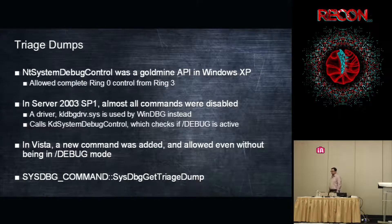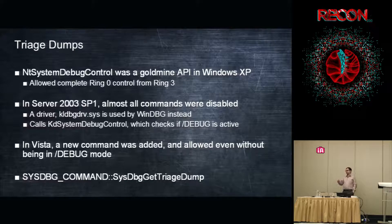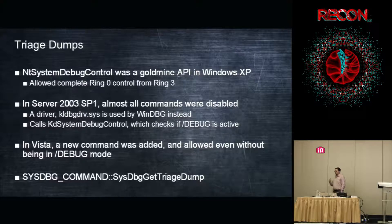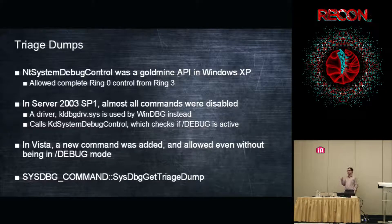Another really cool API is the triage dump, which is actually helpful for development too. Back in XP, NtSystemDebugControl let you basically do anything to the kernel if you were admin — read anywhere, write anywhere. They stopped that in 2003, requiring a signed driver and debug mode boot for kernel debugging. But in Vista, they added a special undocumented flag to SystemDebugControl that you can still use even without debug mode: getTriageDump. It generates a kernel dump as if your machine had crashed — your PCR, PCRB, timers, DPCs — targeted to a specific process.